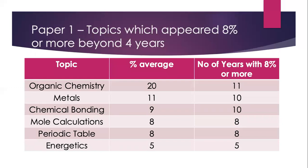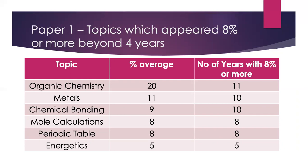For Paper 1, these are the topics that appeared at 8% or more beyond four years. I calculated the percentage average of each topic in Paper 1 (the MCQ paper) and the number of years that topic had 8% or more. Organic chemistry leads with an average of 20%, appearing at 8% or more across all eleven years. Metals come second at 11%, with chemical bonding third. Mole calculations and the periodic table achieve the same percentage average and the same number of years at 8% or more.